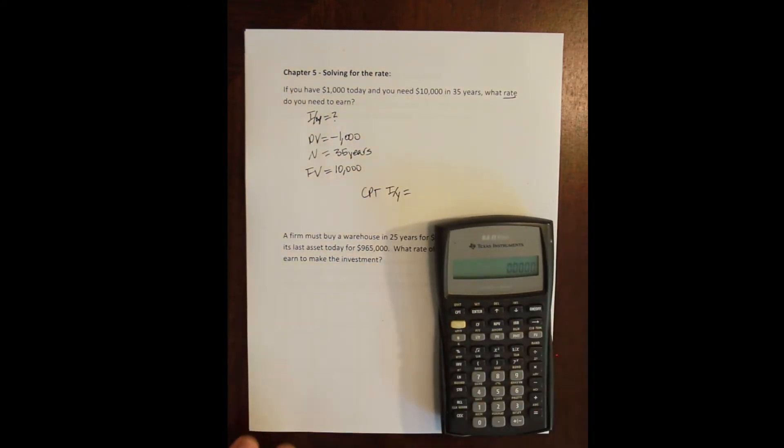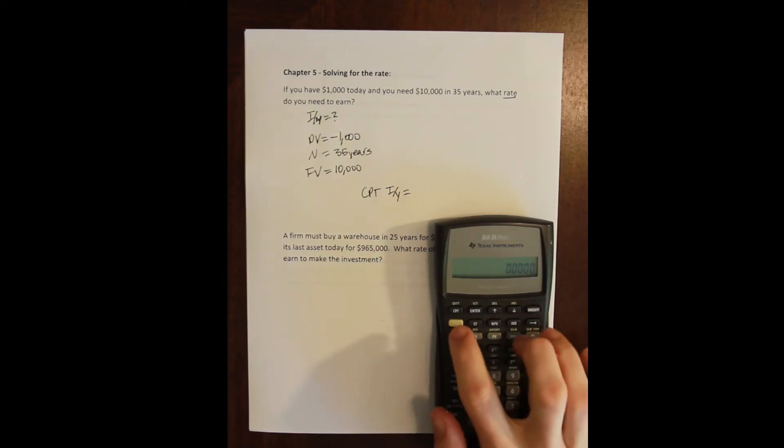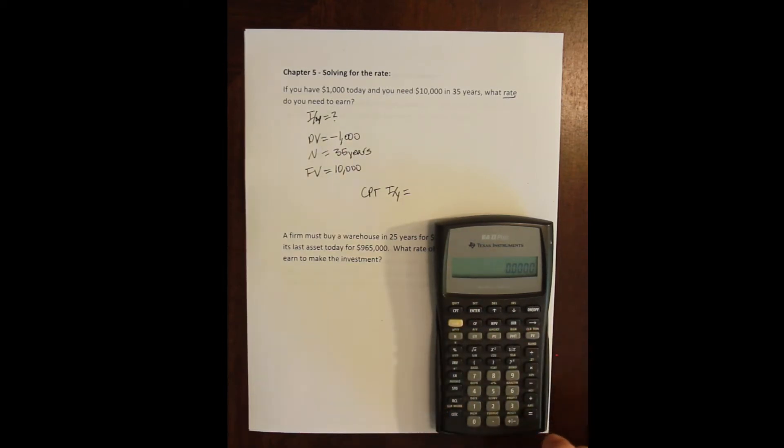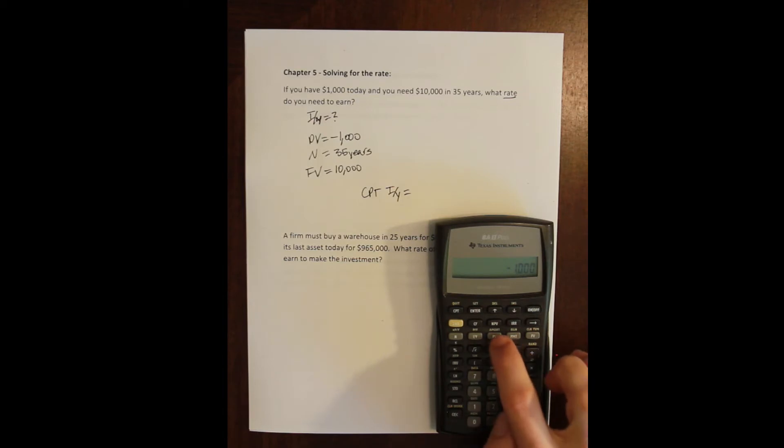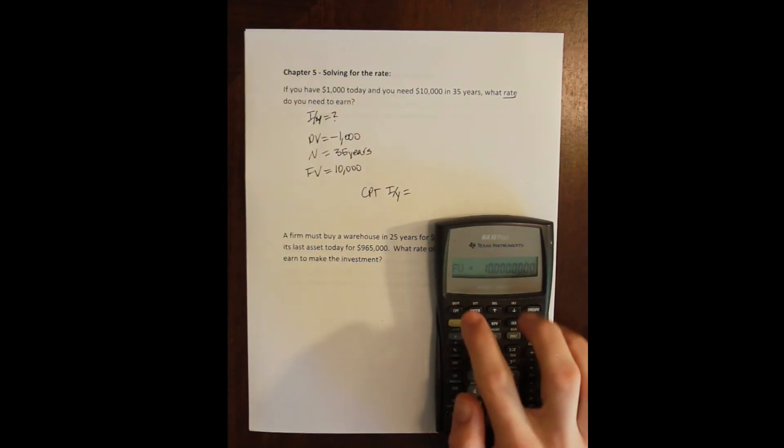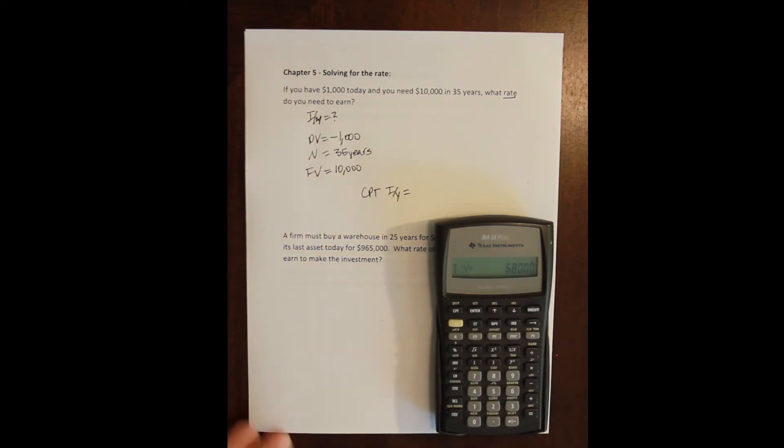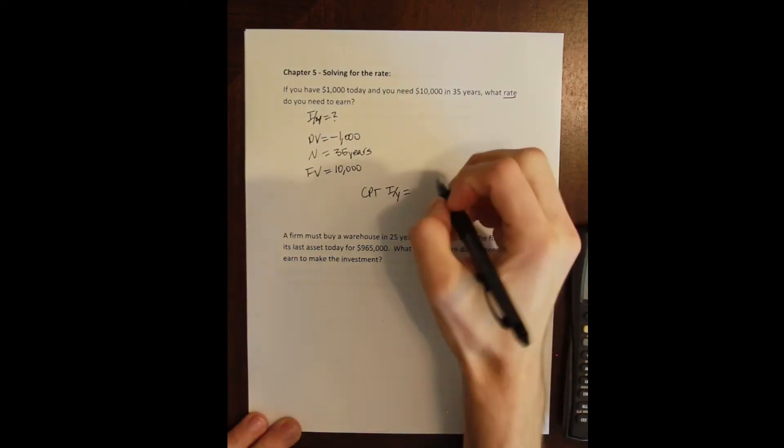And what I'm going to do is compute my IY. So we come over here to the calculator. We second future value to clear the time value money function. We enter in the present value. This is the cash outflow that we are going to invest in some account. So a thousand make it negative. That's our present value. We're going to leave it in the account for 35 years. So 35 and then N. And at the end, we're going to hope there's $10,000 there. So 10,000 in future value. What we're going to solve for is the IY. What's the rate that we're going to need to earn to make this happen? And we can see that that is 6.8.